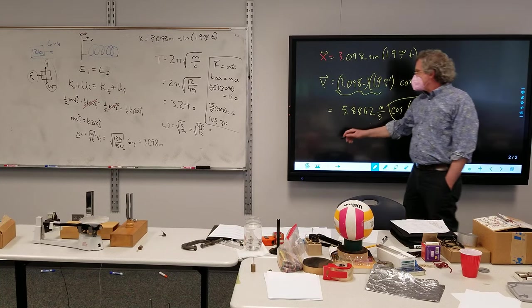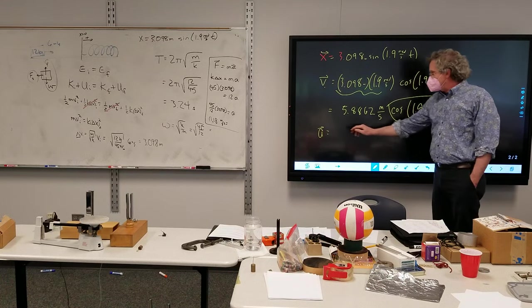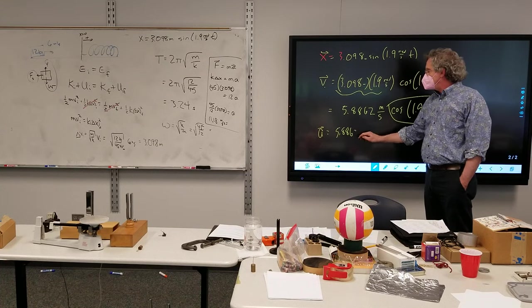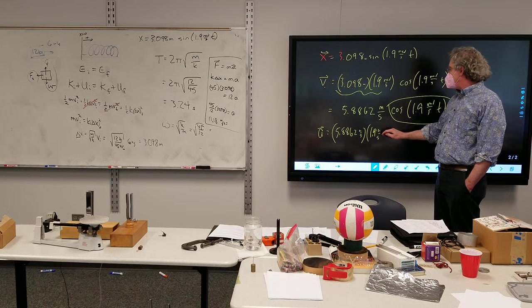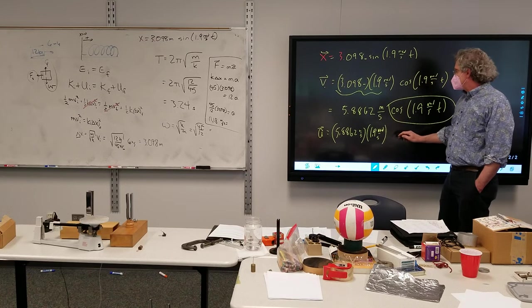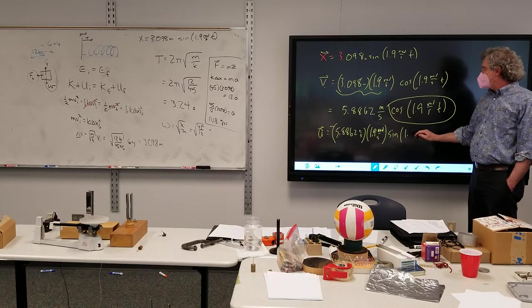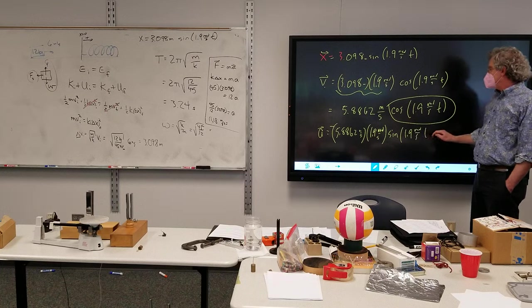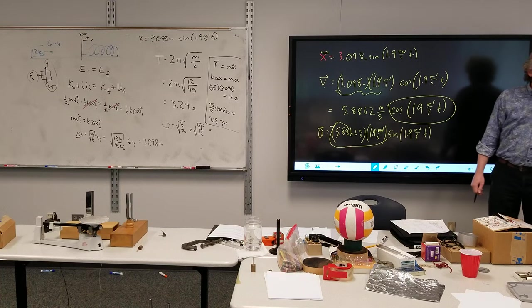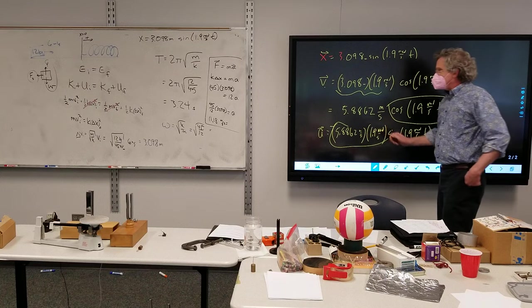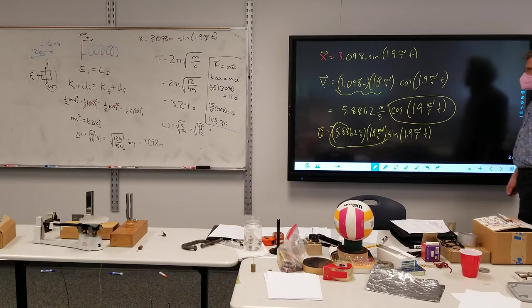Alternatively, going along this pattern here, my acceleration is going to be that times this 1.9 again, so I get 5.8862 meters per second times 1.9 radians per second. Negative sign, 1.9 radians per second. That's going to be my maximum acceleration, that's going to happen at my extremes. So if I multiply those two together, we should get somewhere around 11.18, but we do our rounding, so it'll be slightly off.